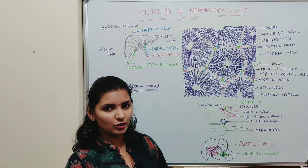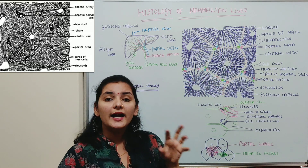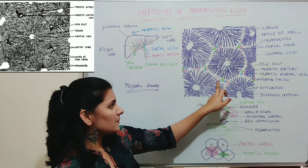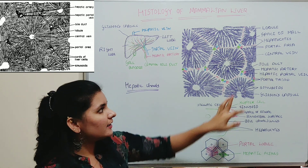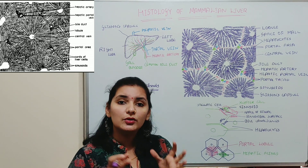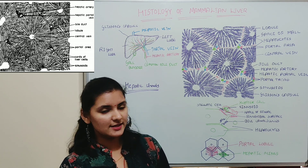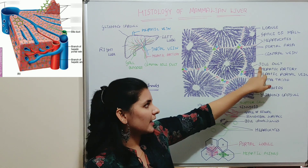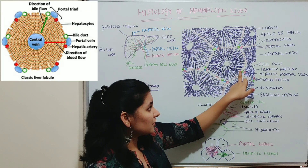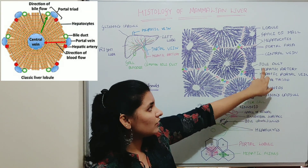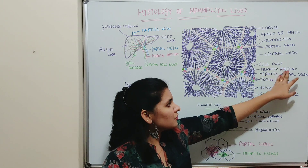Each liver lobule is surrounded by a thin layer of connective tissue, and at certain angles this connective tissue forms a mass or island of connective tissue with branches of ducts and blood vessels, known as the portal area or portal canal. The portal area is somewhat triangular in shape and consists of a branch of the bile duct, a branch of the hepatic artery, and a branch of the portal vein — these three structures together are called the portal triad.